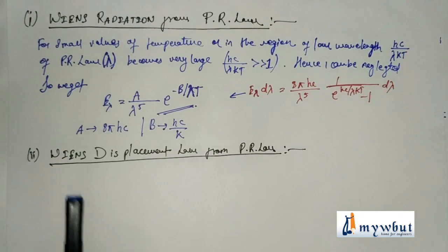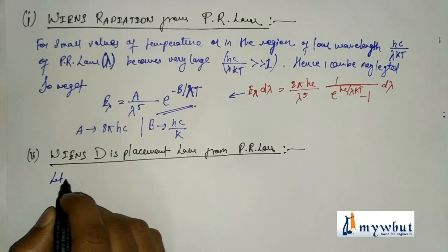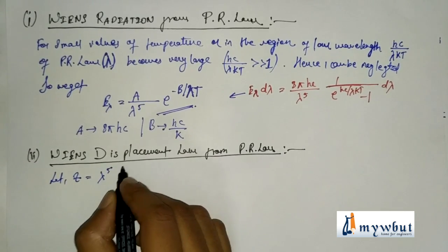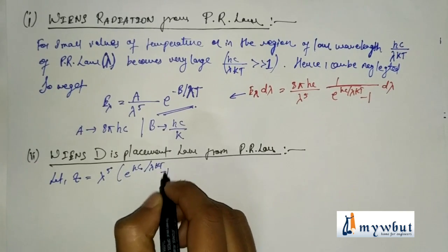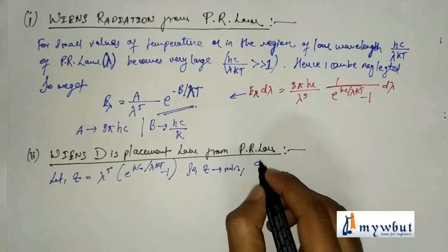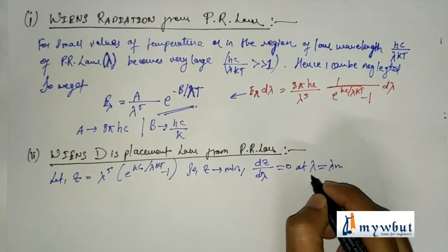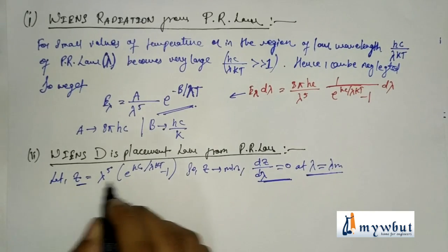Now let us derive Wien's displacement law from Planck's radiation law. Planck's law shows that for a particular temperature, the emissive power E_λ for a black body increases with wavelength, becomes maximum at a particular wavelength λ_m. For E_λ to be maximum, the denominator z = λ⁵ · (e^(hc/λkT) − 1) must be minimum, so dz/dλ = 0 at λ = λ_m.